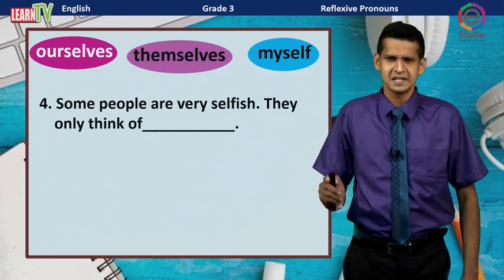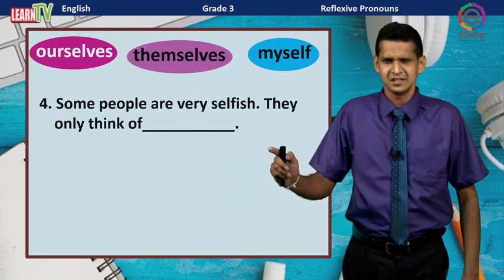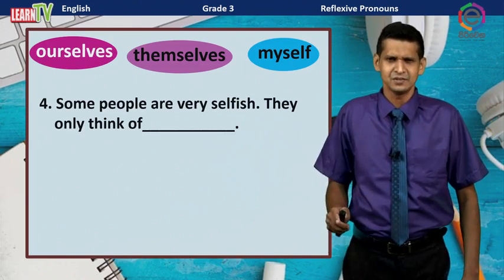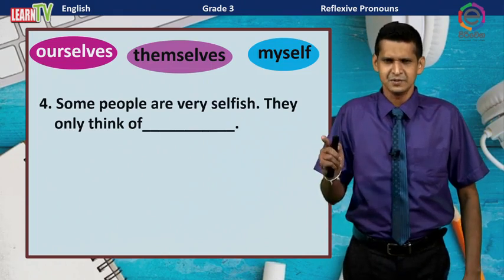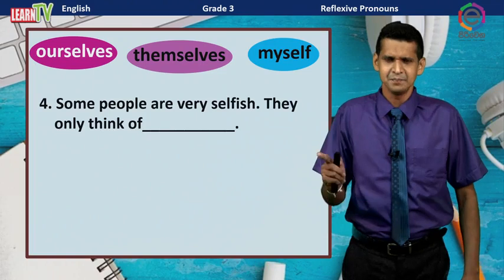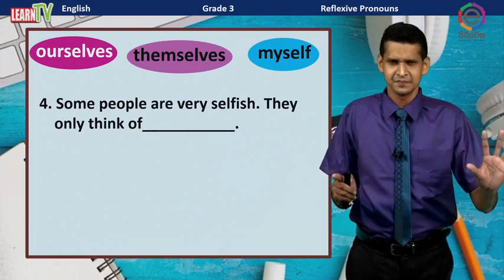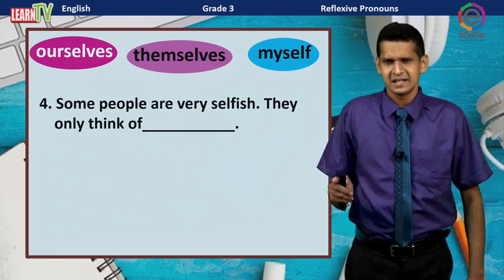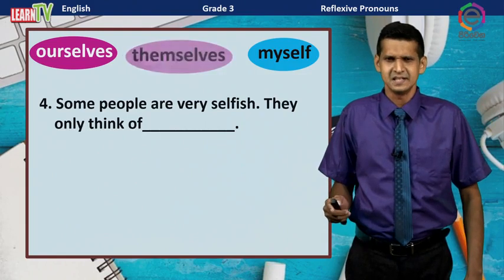Some people are very selfish. They only think of ___. First of all, we have to find the subject pronoun here. For 'some people,' we can use the subject pronoun 'they.' So the correct reflexive pronoun is 'themselves.'